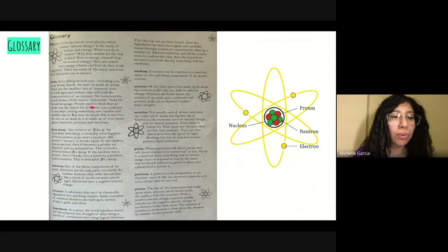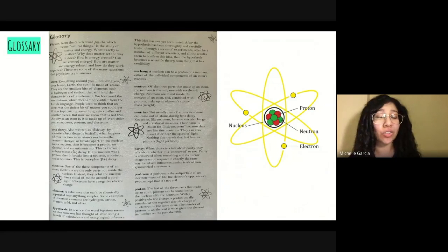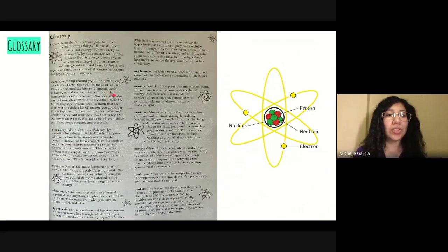Now people used to think that an atom was the tiniest bit of matter you could get if you kept cutting something into smaller and smaller pieces. But now we know that is not true. As tiny as an atom is, it is made up of even tinier parts. Neutrons, protons, and electrons. So let's go over to neutron.